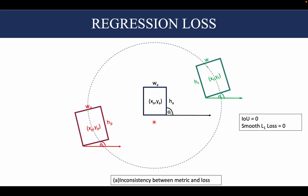If we consider the black to be an anchor box, the green to be a ground truth box, and the red to be a prediction box, and if we see the parameters — that is width, height, and the angle — and compare them with that of the ground truth box, we find that the regression has taken place accurately. But if we consider the center point coordinates, they have not regressed accurately.